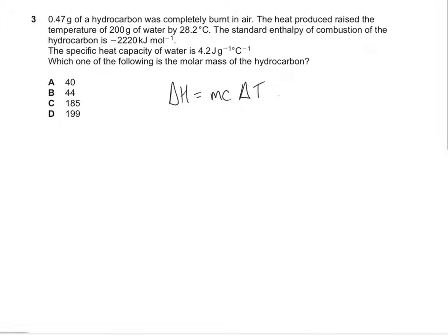And that will get you the specific enthalpy change for this reaction, for the amount of hydrocarbon that you have used. So remember that mass, m, must be the mass of water used and that's 200 grams times by your specific heat capacity which is 4.2 times by your ΔT which is your temperature change which in this case is 28.2.